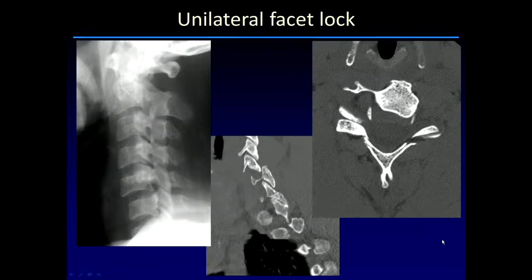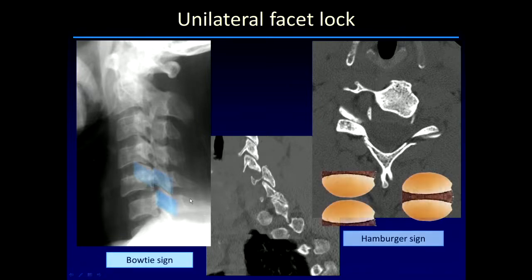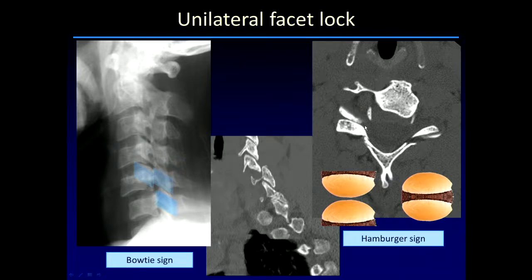If the flexion injury is combined with rotation, the lock may be unilateral. In these patients, the degree of listhesis tends to be less pronounced and can be difficult to appreciate on radiographs. On a parasagittal CT on the side of the lock, you can see the abnormal relationship. On the axial images at the level of the lock, the abnormal side shows the so-called reverse hamburger sign, where the rounded non-articular portions are in contact with each other rather than the normal flat articular portions.